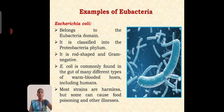The best example for eubacteria is Escherichia coli, which belongs to the eubacteria domain. It is classified into the Proteobacteria phylum. It is rod-shaped and Gram-negative. E. coli is commonly found in the gut of many different types of warm-blooded hosts, including humans. Most strains are harmless, but some can cause foodborne illness or food-poisoning infections.